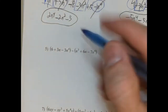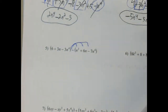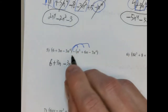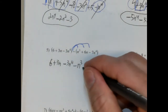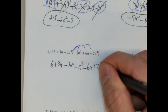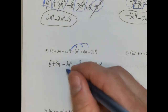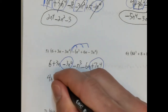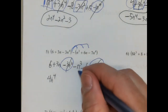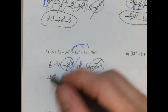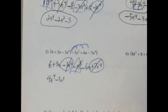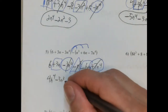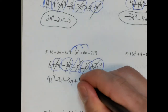Again, we have another negative sign here, so we have to distribute that. Let's rewrite this without any changes — get rid of the parentheses: 6 plus 3n minus 3n to the fourth. And then we're going to distribute that negative sign: so negative n cubed minus 6n plus 7n to the fourth. The highest exponent is n to the fourth: negative 3n to the fourth and positive 7n to the fourth, so negative 3 plus 7 is positive 4 — so 4n to the fourth. We have negative n to the third — no other term — so negative 3n to the third. And we have negative 6n and positive 3n, so 3 minus 6 is negative 3n. Then we just bring down the 6 because it's positive.